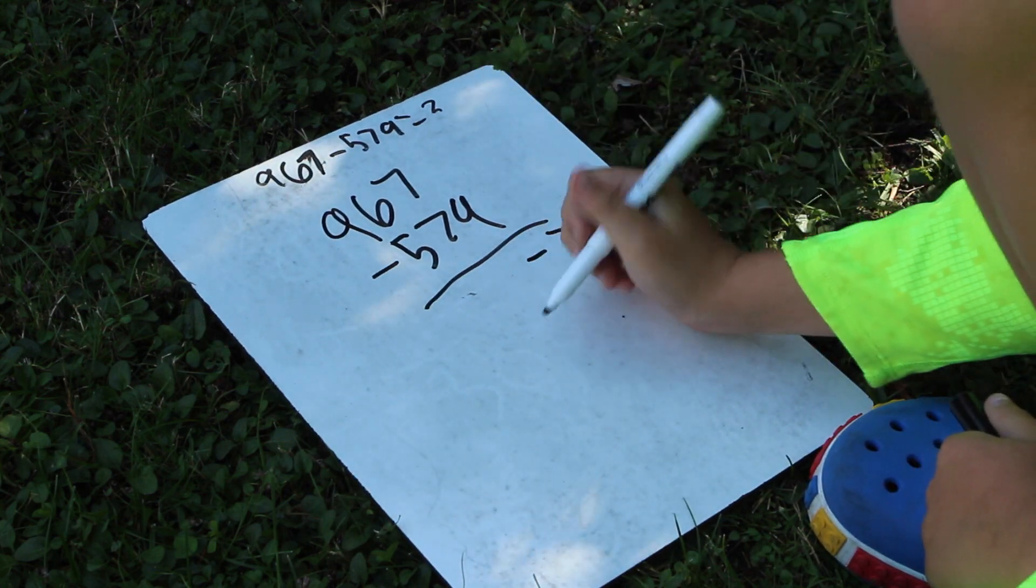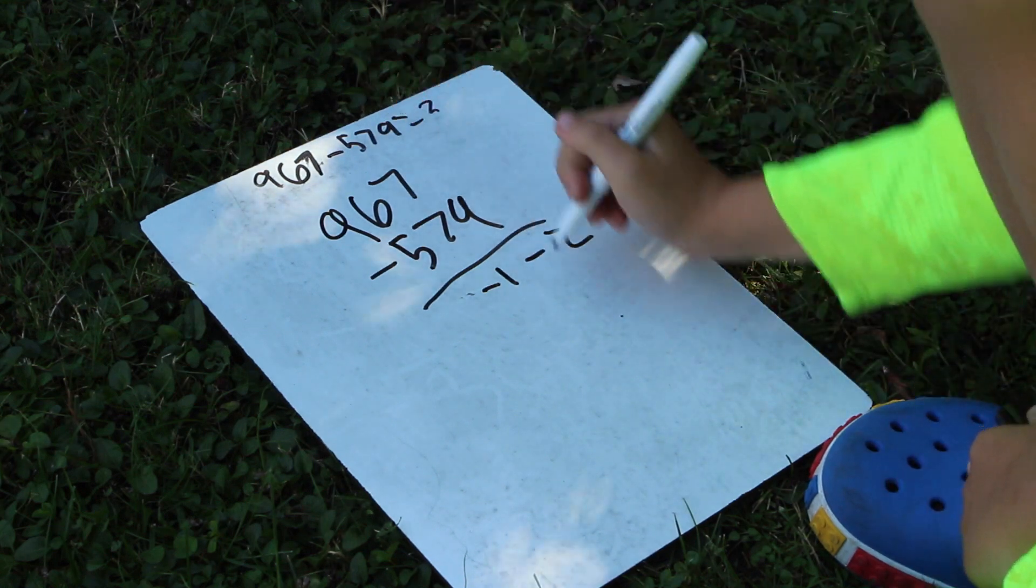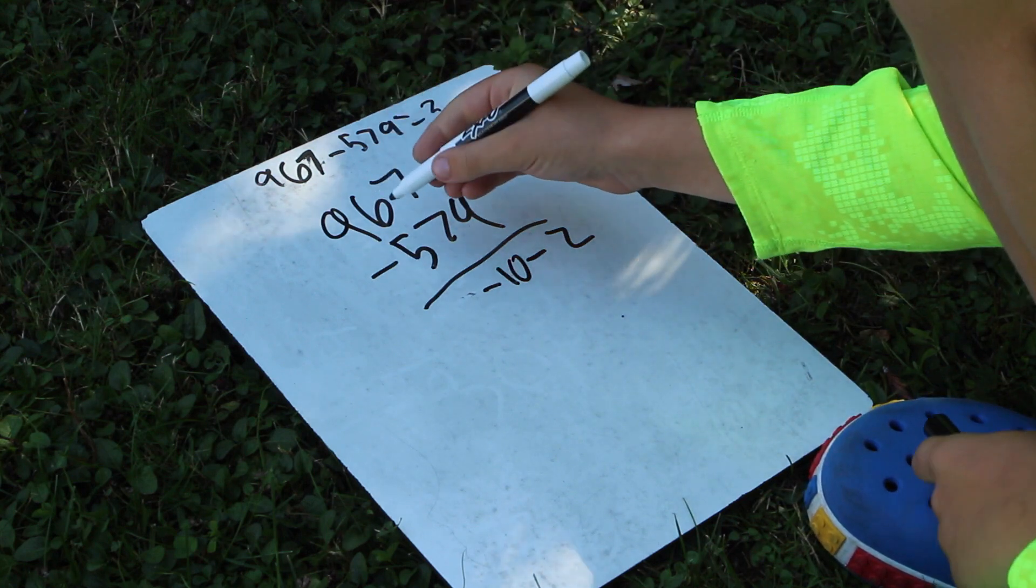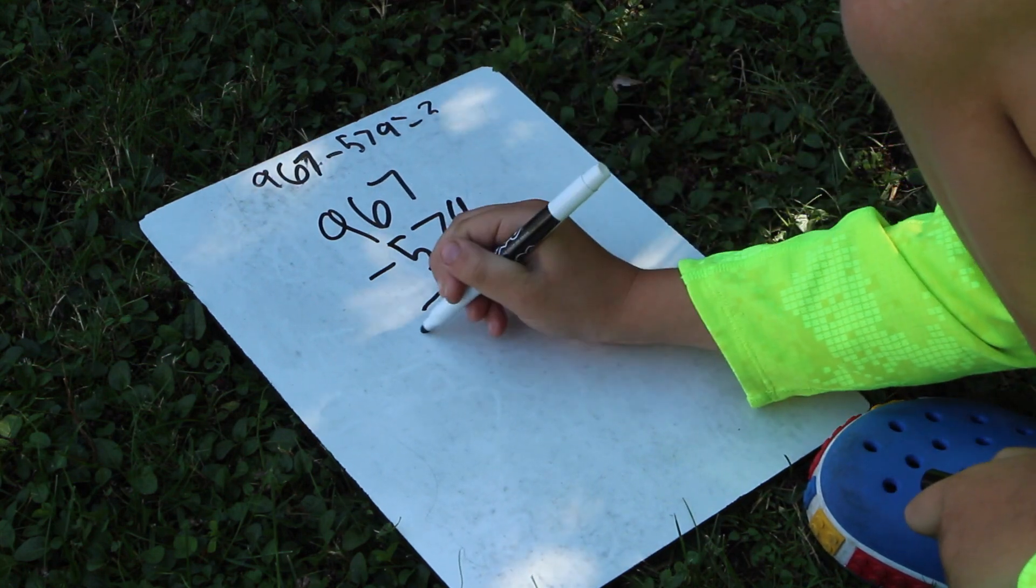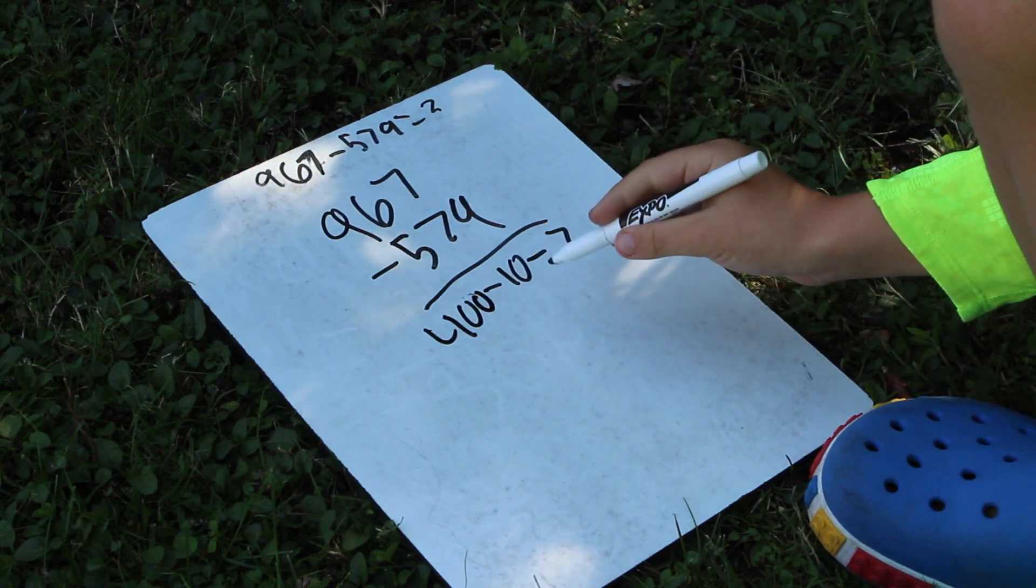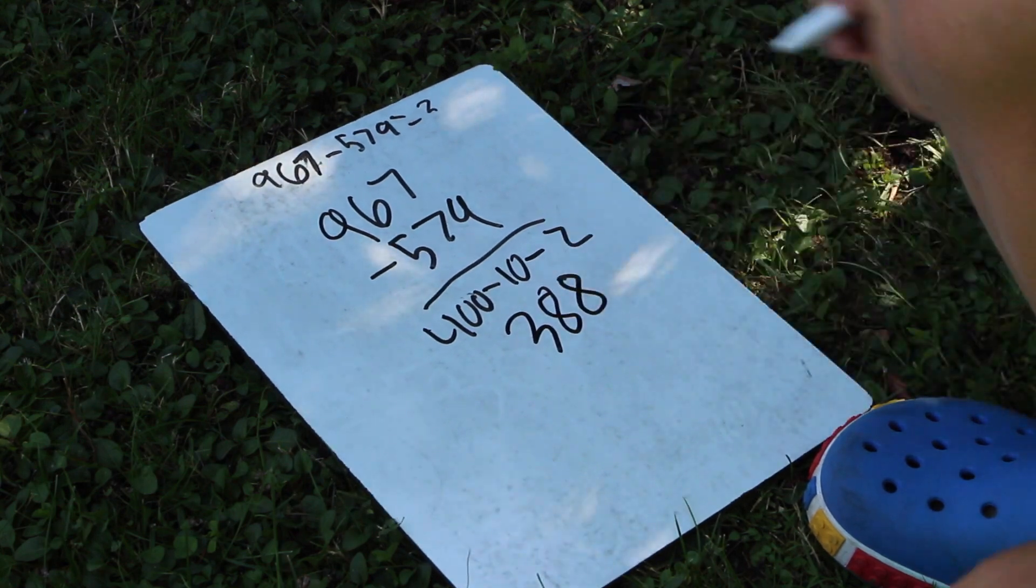6 minus 7 is minus 1, but 60 minus 70 is what it really is, so it's minus 10. And 900 minus 500 is 400. So 400 minus 10 minus 2 is 388 which is our answer.